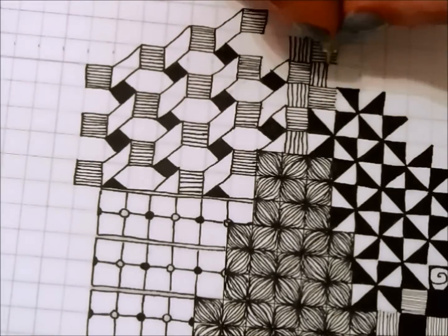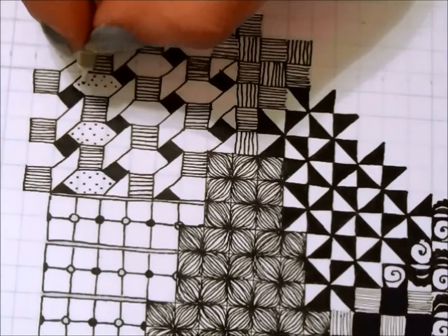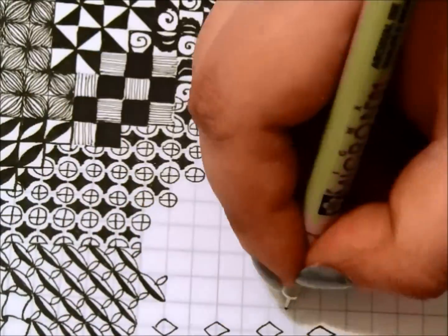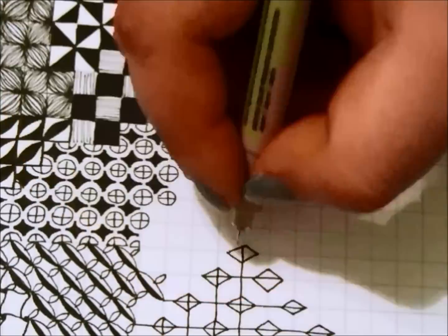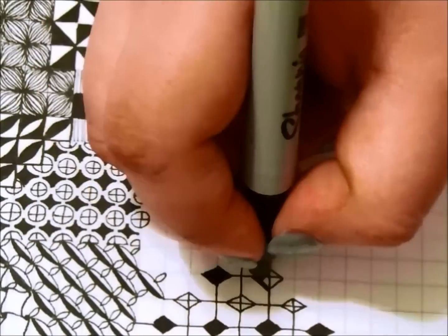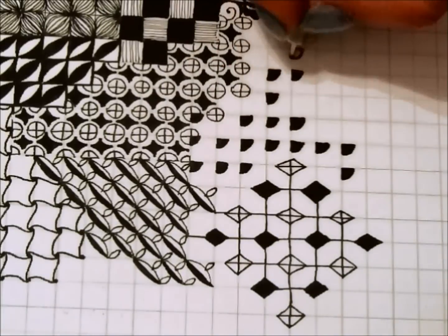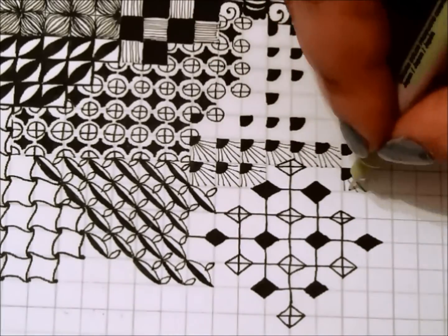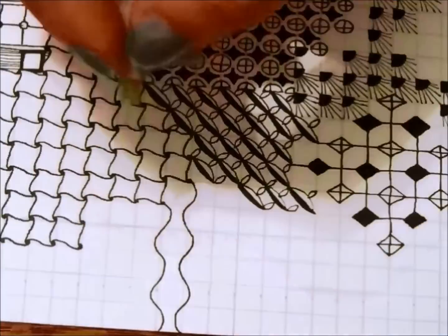And what you will receive is 20 original tangles that are exclusive to this course, which means I will not be putting them on YouTube. They are my original tangles. And each of those tangles, most of them have variations. So really at the end of the course, you will have much more than 20 tangles.